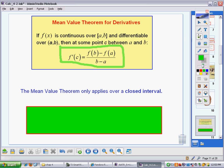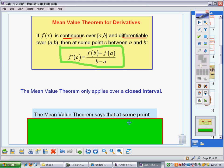Now, that's the details up here. C's got to be between A and B. The only conditions you have to have on this, there are two conditions. The function must be continuous and you must be able to take a derivative. The mean value theorem only applies over a closed interval. The mean value theorem says that at some point in the closed interval, the actual slope equals the average, or the instantaneous speed equals the average speed.